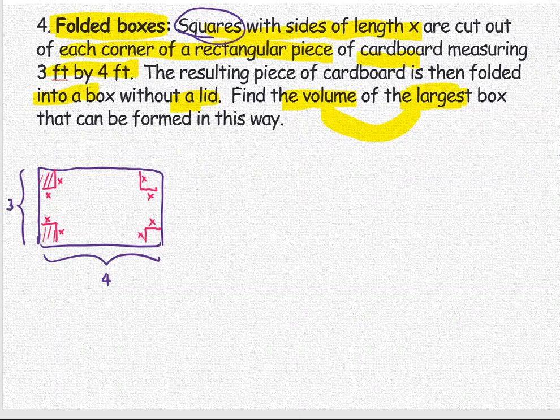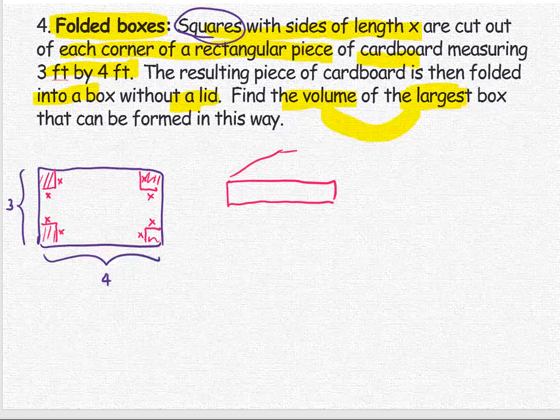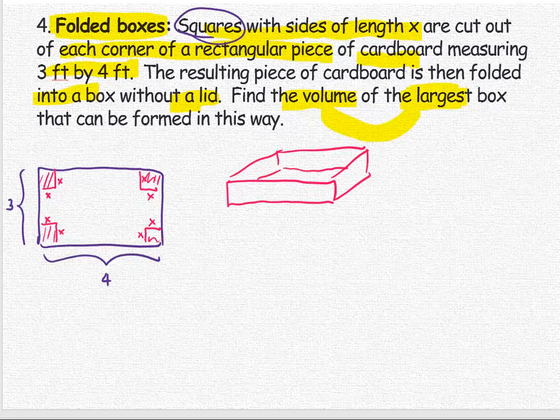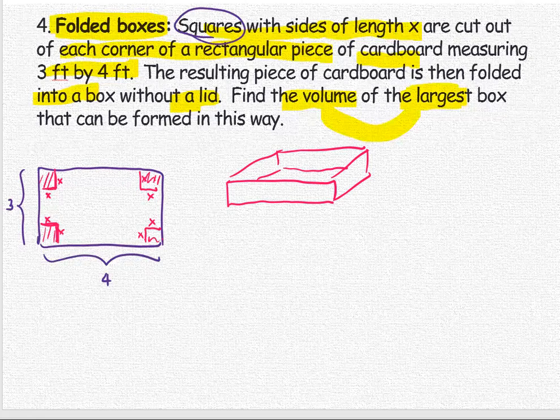If we take the four squares at the corners out and fold the piece of paper, it becomes a box without a lid. The piece that we cut out from the four corners becomes the height of the box, which is x.